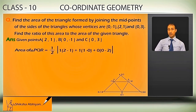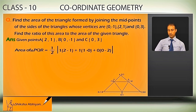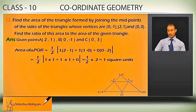Now area of triangle PQR. The formula remains the same. I let P=(1,0) as (x1,y1), Q=(1,2) as (x2,y2), and R=(0,1) as (x3,y3). Area of triangle PQR = ½ |1×(2-1) + 1×(1-0) + 0×(0-2)| = ½ |1×1 + 1×1 + 0| = ½ |1 + 1|.